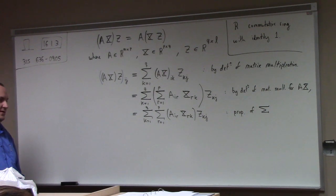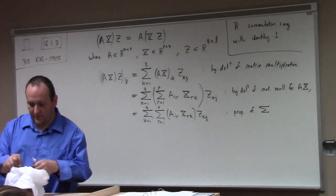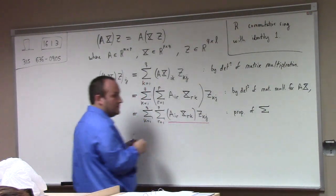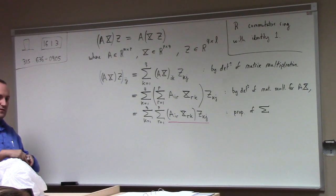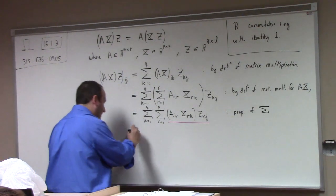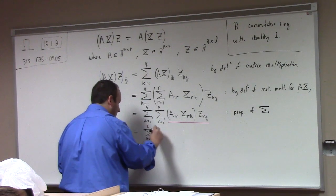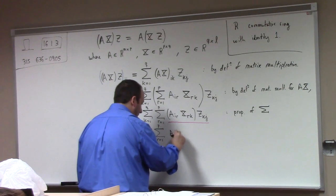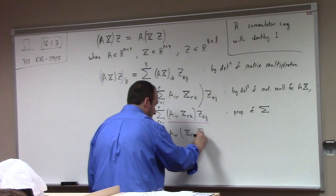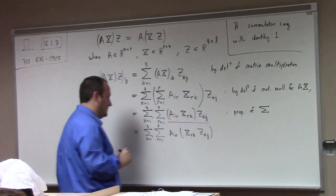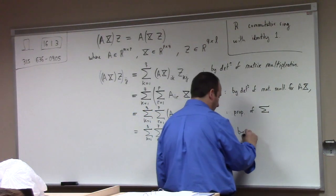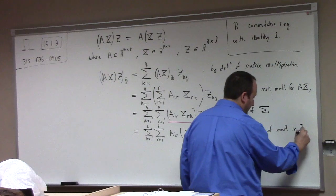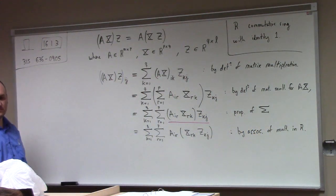What can I do with what I'm looking at? What is a commutative ring? In particular, it has a multiplication which is associative. At this point I'm going to use the associative property of multiplication on the ring. So this becomes: sum K equals 1 to Q, sum R equals 1 to P, of A_IR times (X_RK times Z_KJ). This is by associativity of multiplication in the ring R, or because ring multiplication is associative by assumption.